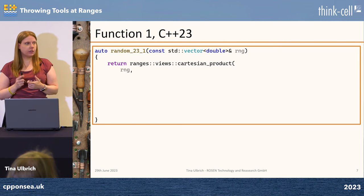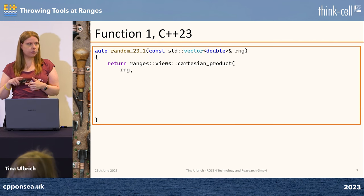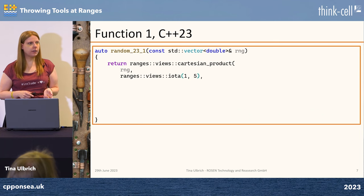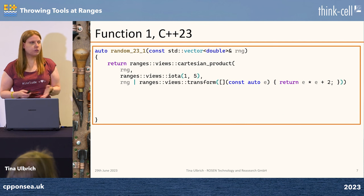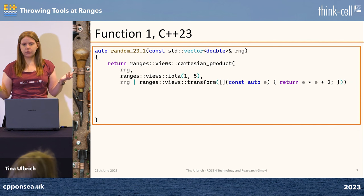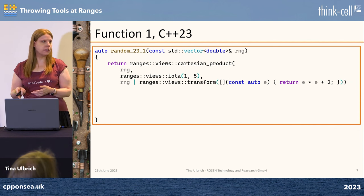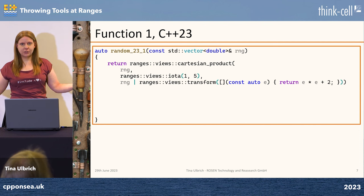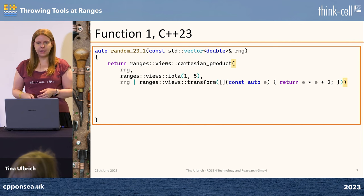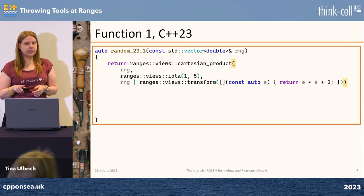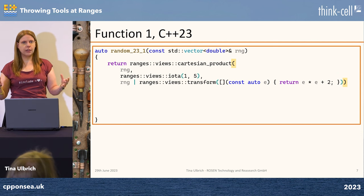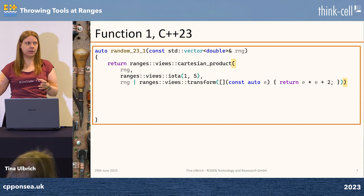The first range I'm using in Cartesian product is a vector that is input into the function. Then I have an iota view which starts at 1 and counts to 4, just to have more ranges in there. Then I use the input range again, but I'm going to transform it — I'm going to square the values and add 2. It doesn't make sense; it's just to have some modification of the input range. When we close the brackets, we've created this Cartesian product, which is a new view containing tuples of all the combined elements.